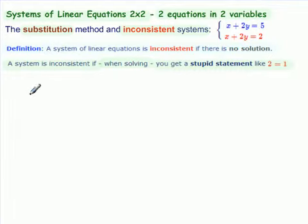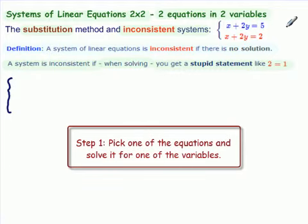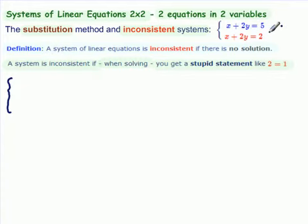So, what is step one of the substitution method? Step one is pick one of the equations and solve it for one of the variables. So let's take the top equation and solve it for x. That means we subtract 2y from both sides. So x equals 5 minus 2y. Rewrite our second equation.